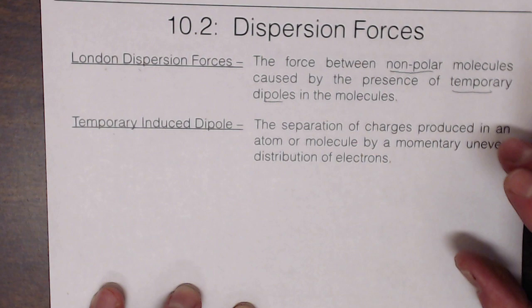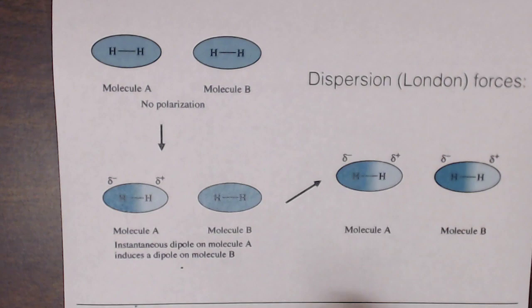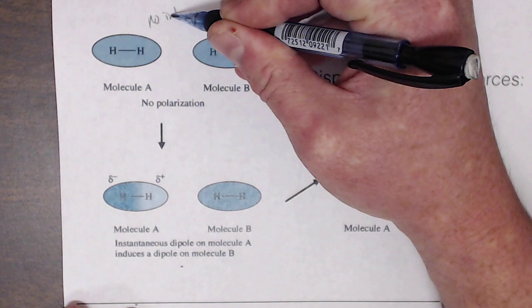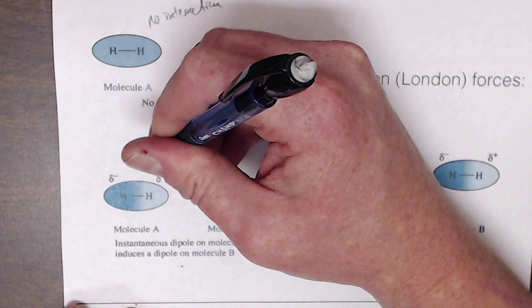We discussed this briefly in the gas laws chapter. Consider the simple example of H2. When these molecules are well separated, they have no interaction with each other. But as they move closer together, they start interacting.